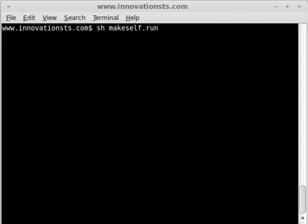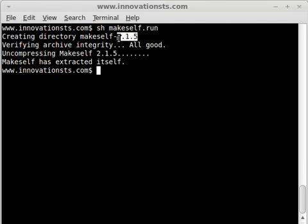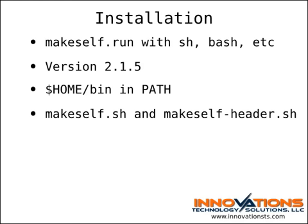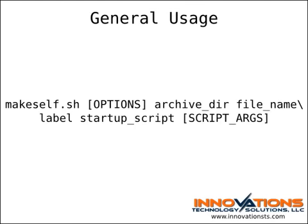You can see from the output that I'm working with version 2.1.5 of makeself.sh for this post. To make things easier, you can install makeself.sh in your ~/bin directory, and then make sure that $HOME/bin is in your PATH environment variable. You need to ensure that makeself.sh and makeself-header.sh are in the same directory together, unless you're going to specify the location of makeself-header.sh with the --header option.